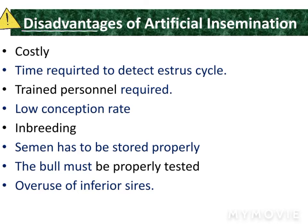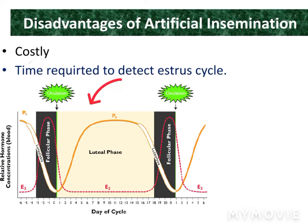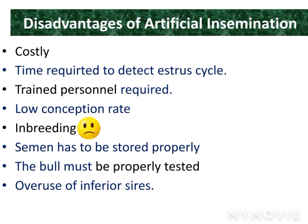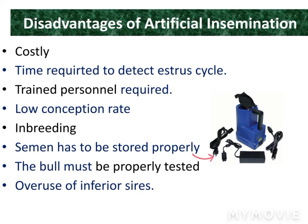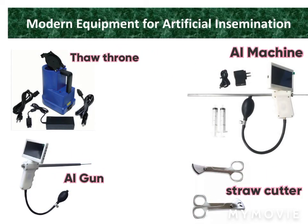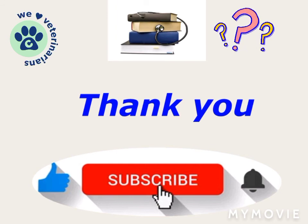Disadvantages of artificial insemination: it is costly, too much time is required for heat detection, trained personnel are required, low conception rate, inbreeding risk, semen has to be stored properly, tested bulls and overuse of inferior sires. Some modern equipment can be seen in the slide. Thanks for watching — for any questions, comment below.